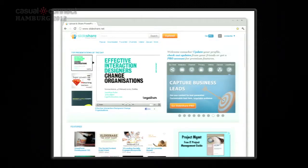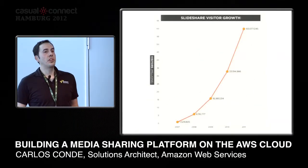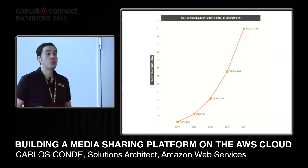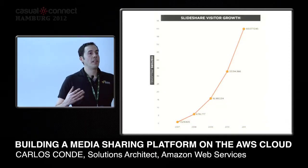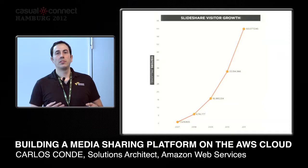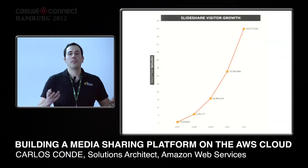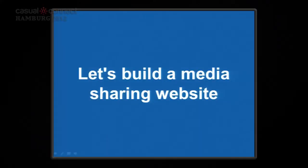All these websites have something in common — they have the same problems, the same scaling issues, the same storage problems, and they also have the same success. This is an example of the growth in number of visitors on SlideShare. The key point is that building a website that sustains several millions of users is an iterative process — you don't build it to sustain millions of users right from the start.